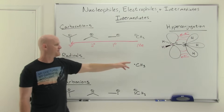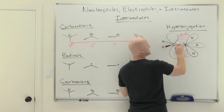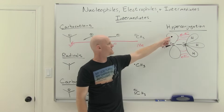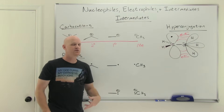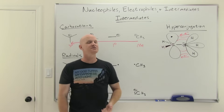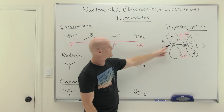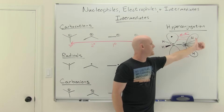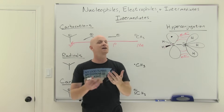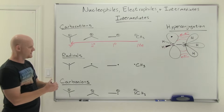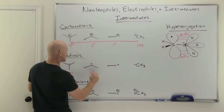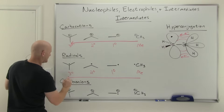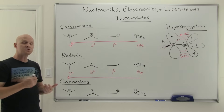For carbon radicals, the only difference from carbocations is that instead of an empty p orbital, there's a single unpaired electron in that p orbital — no positive formal charge, but still sp2 hybridized. That carbon is still electron deficient in the sense that it lacks a filled octet (seven electrons instead of eight). Hyperconjugation still applies: neighboring carbons donate a little electron density, getting the radical carbon closer to a filled octet and making it more stable. So radicals follow the same stability trend — tertiary is more stable than secondary, secondary more stable than primary, and primary more stable than methyl.